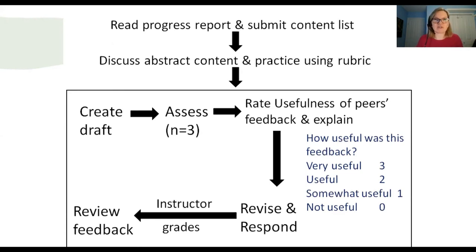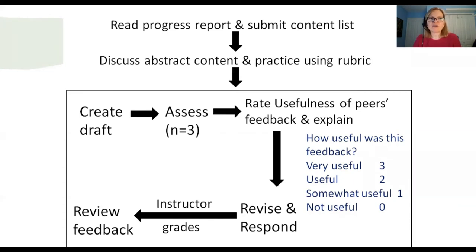What do students do from start to finish for this assignment? Outside of class, they read the progress report and submit a content list — that gets them thinking about what content to include in the scientific abstract, and it's an accountability piece submitted as a document on Canvas, making it much more likely they'll come prepared to class. In class, they discuss their ideas for the content and practice using a rubric on other examples of scientific abstracts. Then everything in the Peer Scholar box happens: three students are randomly and anonymously assigned to assess each student's scientific draft.